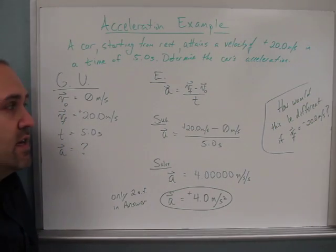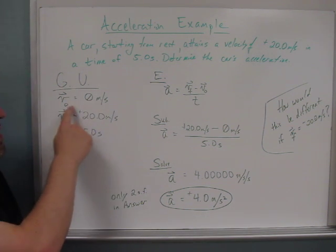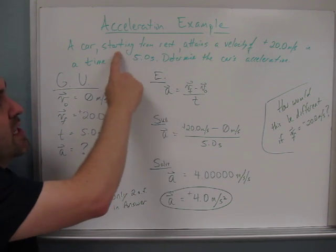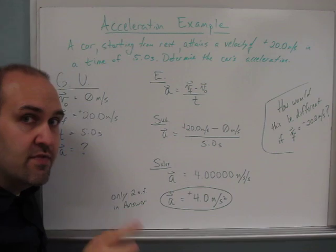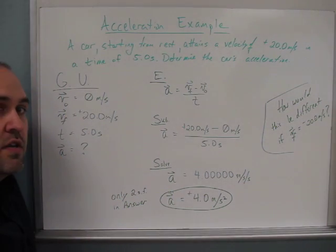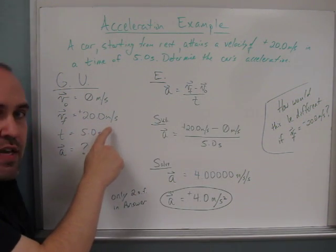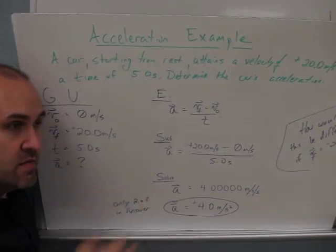We'll use the GUESS method again, so G and U are givens and unknowns. So the original velocity is zero—I know that because it says in the problem it starts from rest. If you see that phrase 'starting from rest,' that gives you a piece of information. In this case, it's the original or the starting velocity. The final velocity is positive 20 meters per second, the time is 5 seconds, and we're looking for the acceleration.